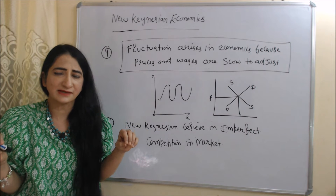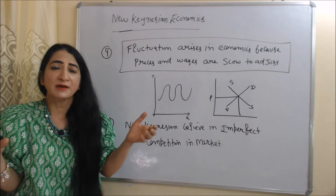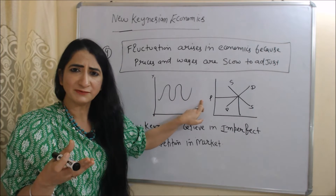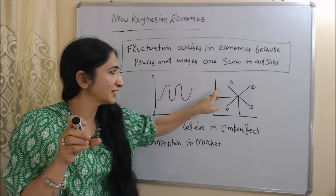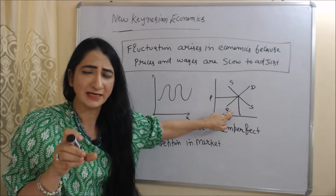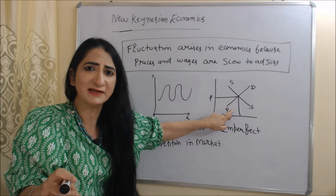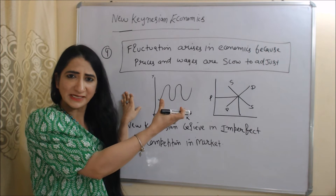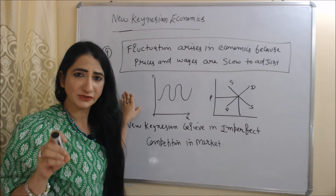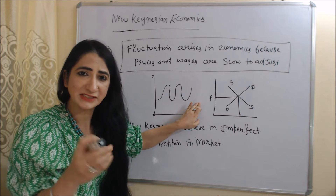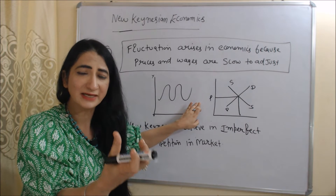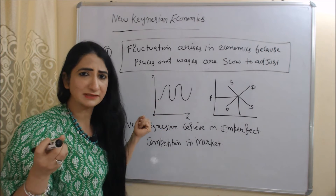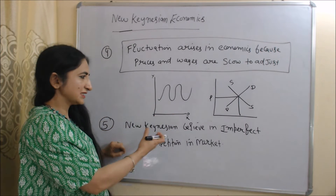According to new Keynesians, fluctuations arise because prices and wages are slow to adjust. We can say that business cycles are produced because prices and wages are slow to adjust to where demand equals supply. If prices and wages quickly adjusted, the economy would always be in equilibrium with no scope for recession, depression, or boom. But since prices and wages are slow to adjust, many fluctuations are created in the economy and business cycles are produced.